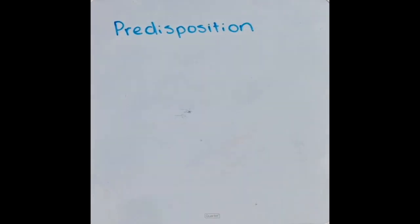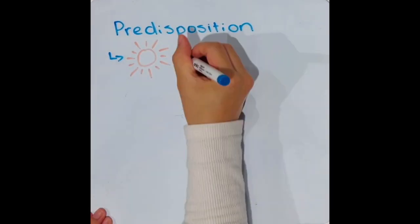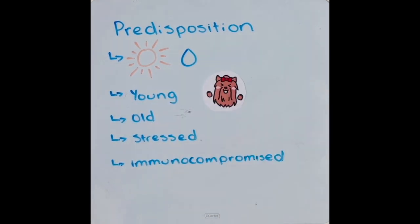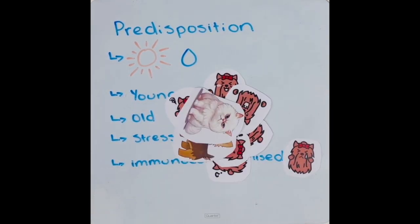Dermatophytes are most prevalent in hot, damp, and humid climates, and are mostly seen in young, old, stressed, or immunocompromised animals. Crowding animals also contributes to the spread of disease.